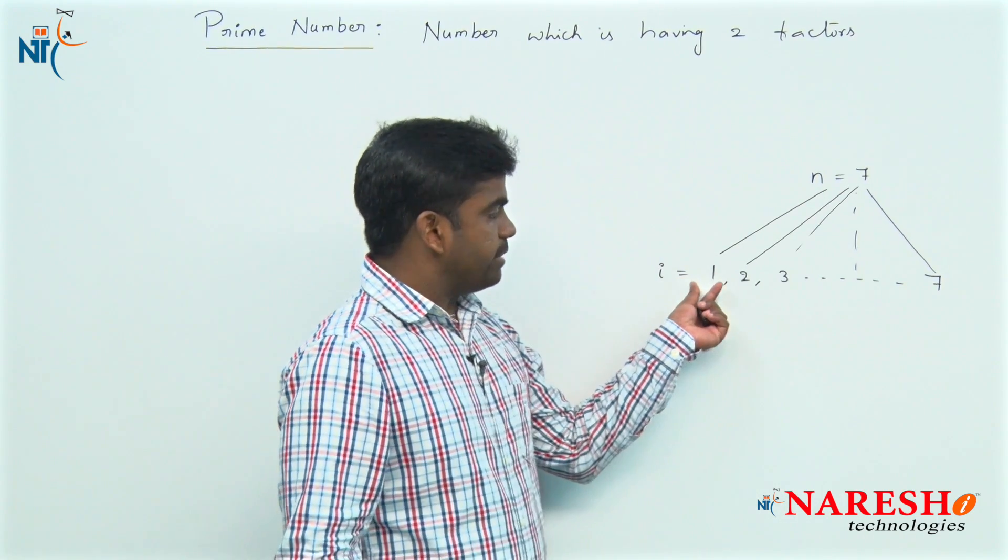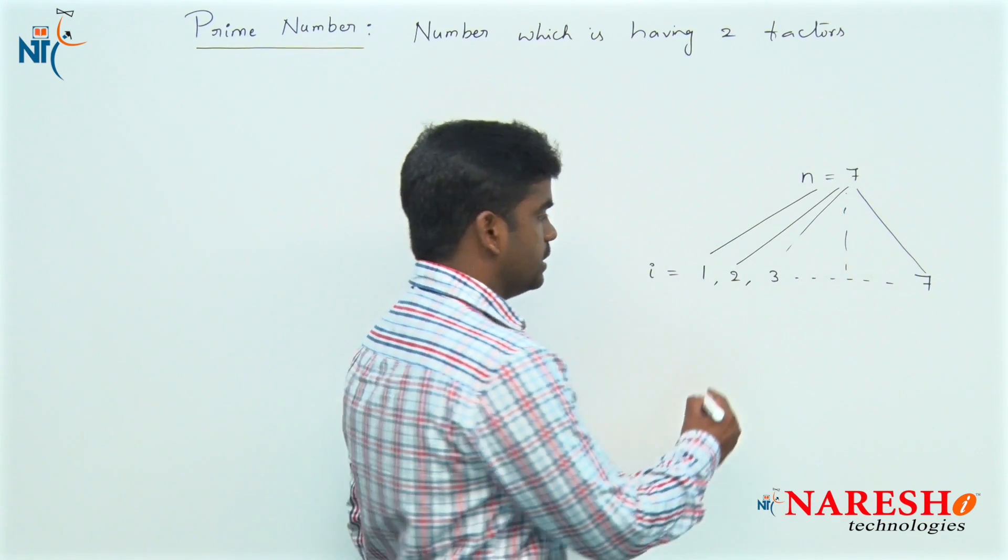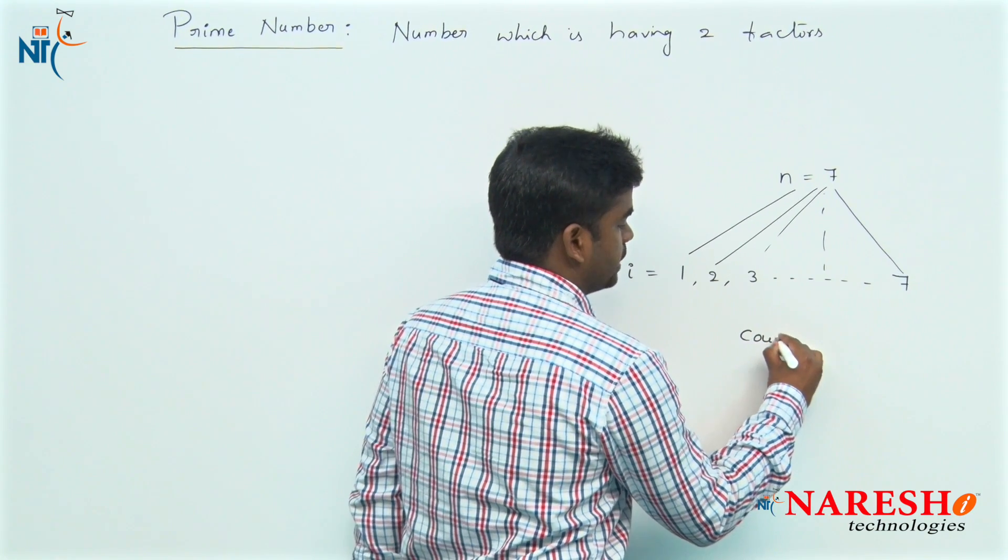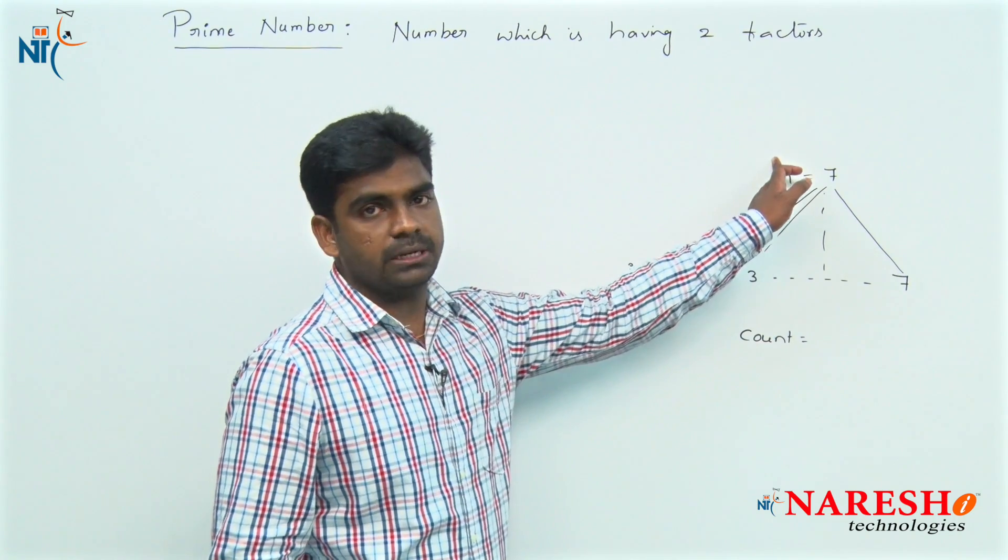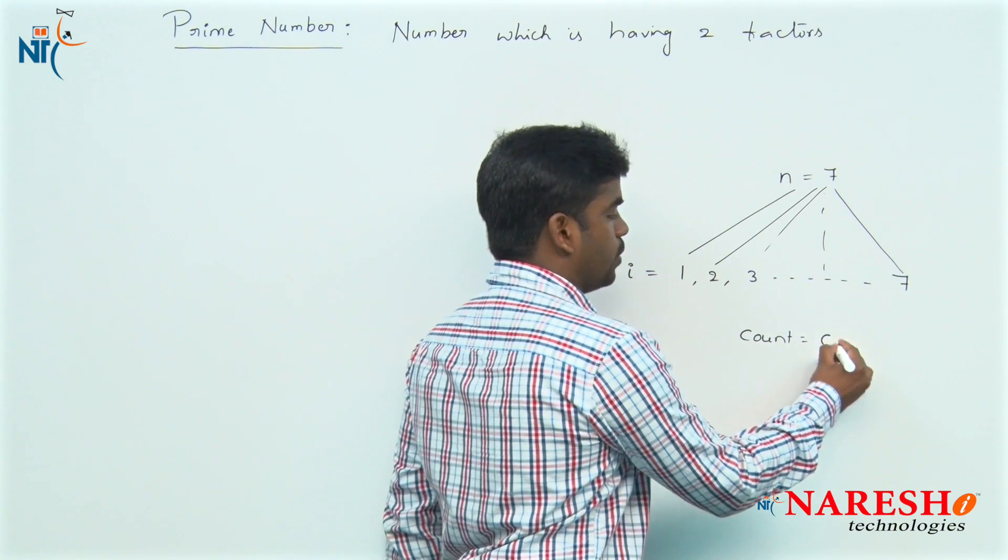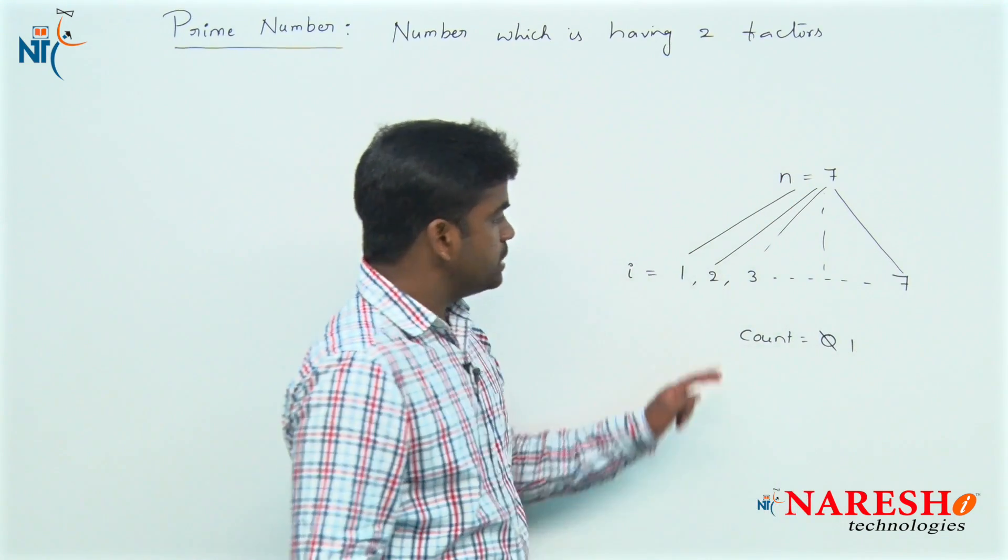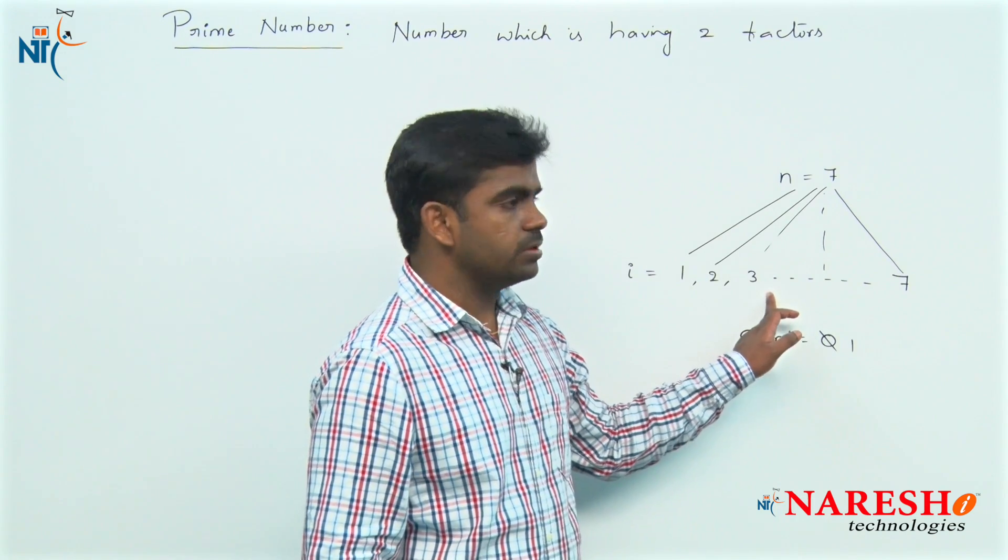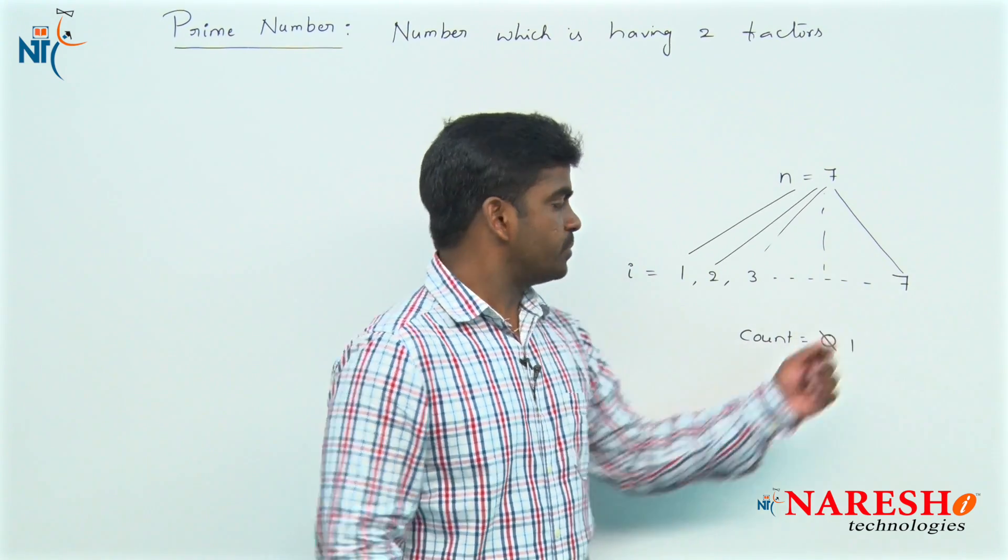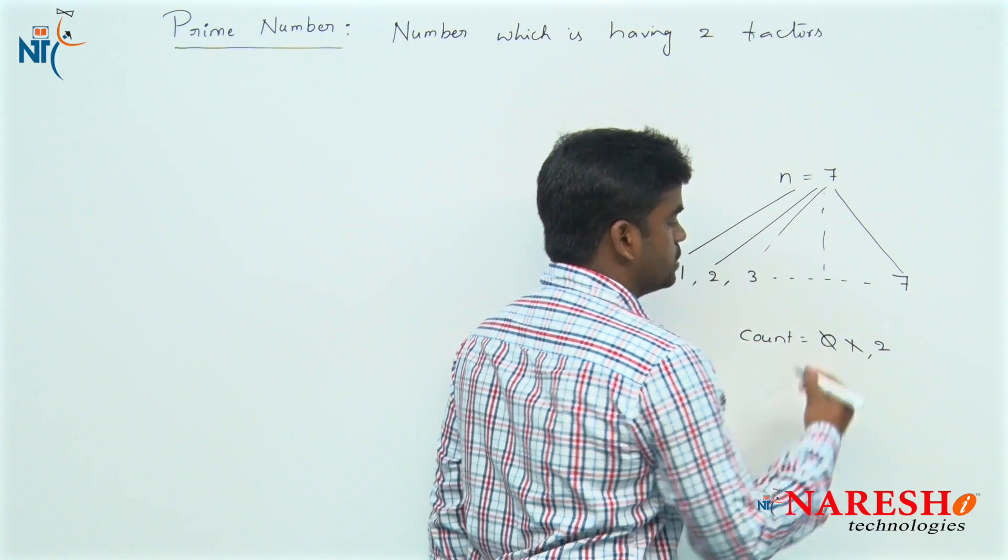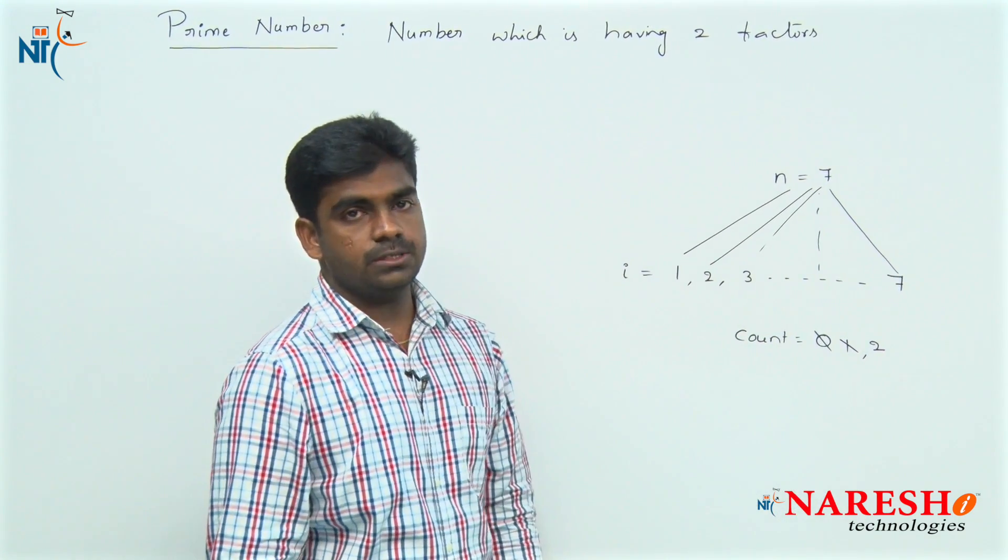If you found any factor, suppose 1 is a factor, then take one count variable. If you find any factor to this variable N, just increase the count value.